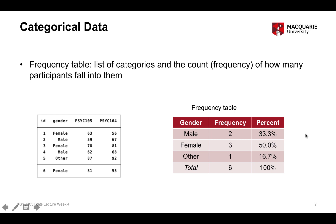A frequency table is a really great way of summarising categorical data, because it gives you a quick overview of how many observations you have in each of these categories. It's a well-presented piece of information.